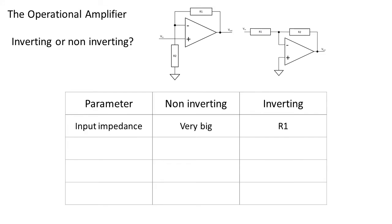First, the input impedance. The input impedance of the non-inverting amplifier is very big because the signal or voltage goes straight to the non-inverting input of the op-amp. The input impedance of the inverting amplifier is equal to the resistor value of R1.